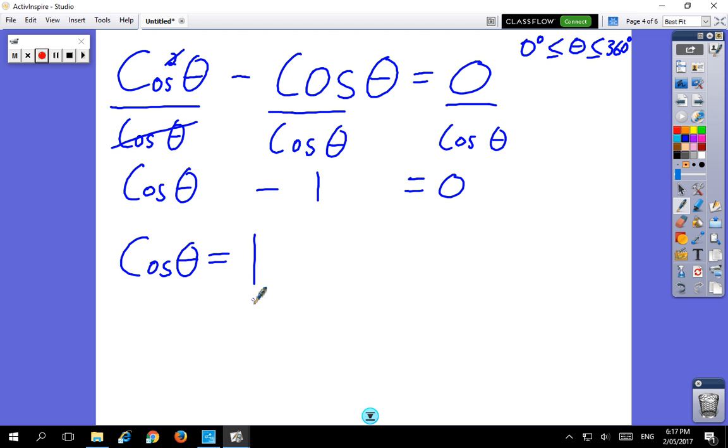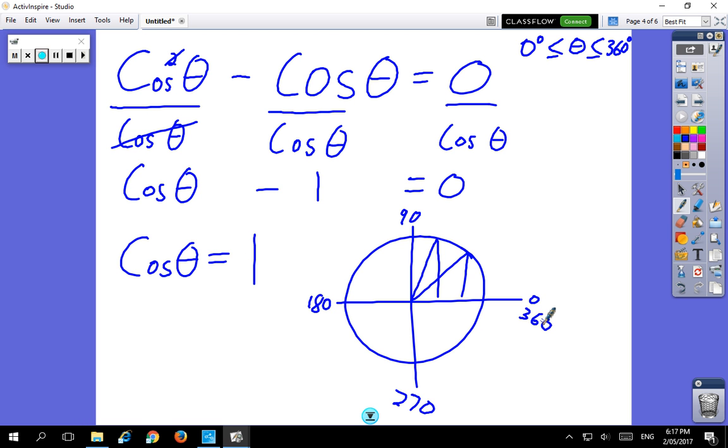Cosθ equals 1. Well, when does cosθ equal exactly 1? When we put it into our unit circle, we're used to finding things within the quadrants. But if I draw cosθ, where does it start from? It starts, when there's a parent function, it starts at a height of 1, and ends at a height of 1. So in this case, when is cosθ 1? Well, cosθ is 1 when θ is 0, and right at the end when θ is 360 degrees or 2π. Because there's been no change to the amplitude, there's been no change to the period or the phase.